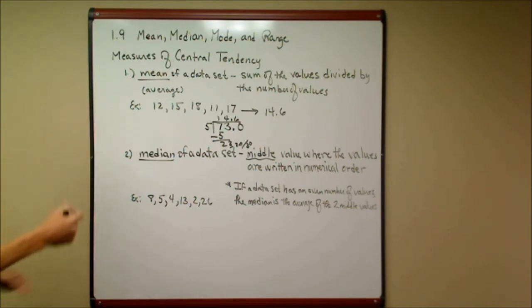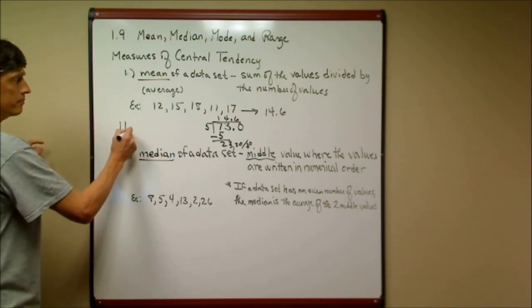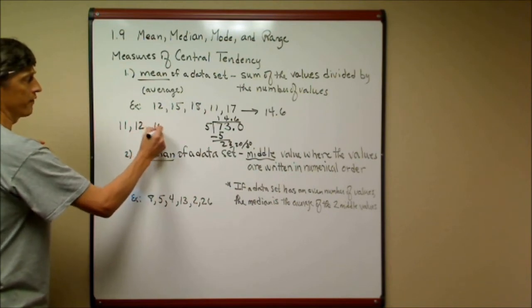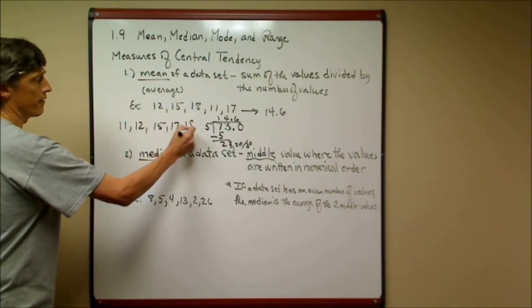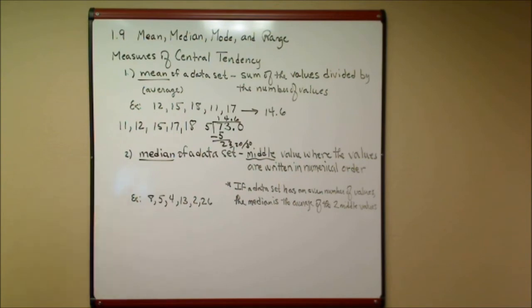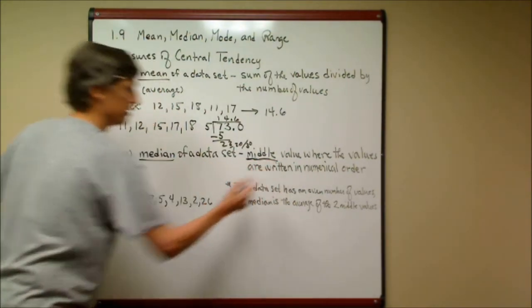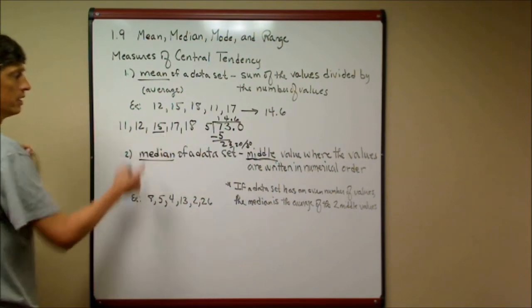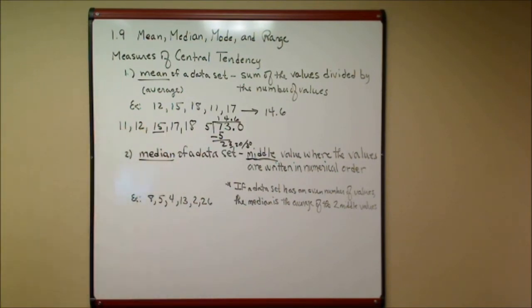So the problem that's above, I have 11, I have 12, I have 15, I have 17, I have 18. These are the five values, and I put them in numerical order from least to greatest, and the one in the middle is 15. So the median of the set of data from the last example would be 15.